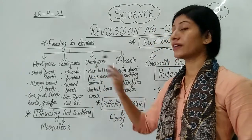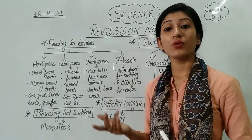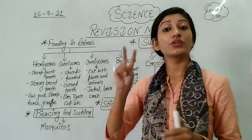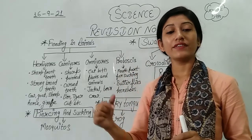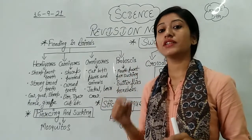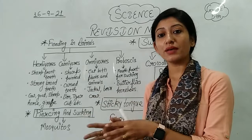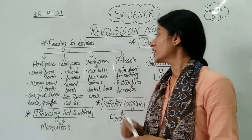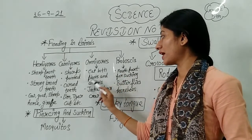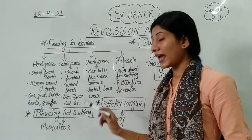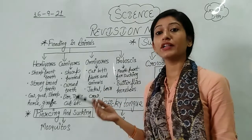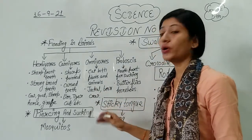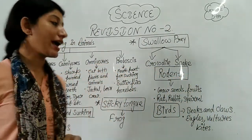Now the third category is omnivores. Omnivores are animals that eat both plants as well as flesh. Omnivores eat both plant and animal matter. Examples of omnivore animals include jungle animals, miller, and crow.